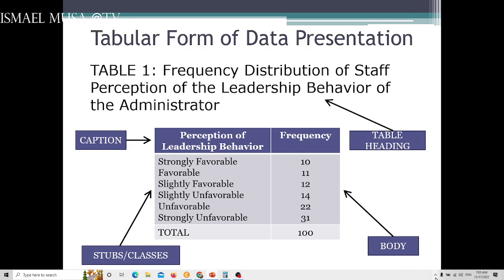This is an example. You see, you have table number, then you have the title. Frequency distribution of staff perception of the leadership behavior of the administrator. So the content will be about the perception of the leadership behavior, and it's a frequency only. So you have the frequency, and the caption is perception of leadership behavior. That is the characteristic you are interested to present. You have the caption, the stubs or the classes, then you have the body.